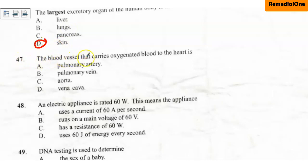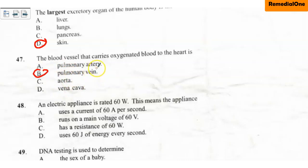Question number 47: The blood vessel that carries oxygenated blood to the heart is — A. Pulmonary artery, B. Pulmonary vein, C. Aorta, D. Vena cava. The correct option is option B, the pulmonary vein. Although all veins generally carry deoxygenated blood, the pulmonary vein is the exception — it carries oxygenated blood from the lungs to the heart.